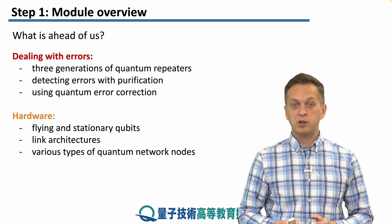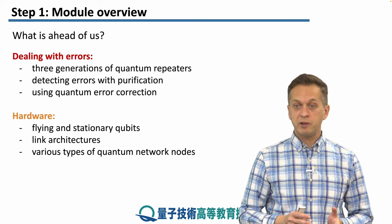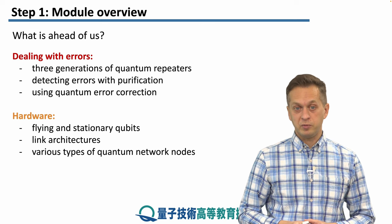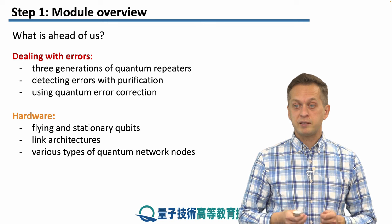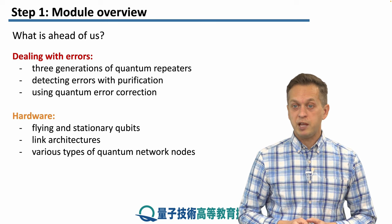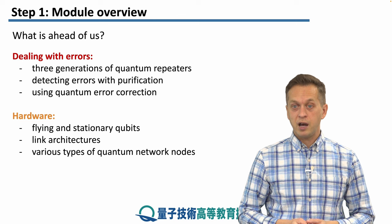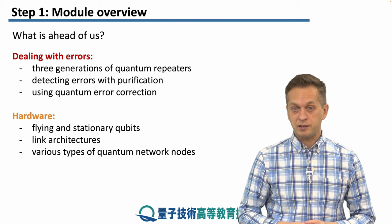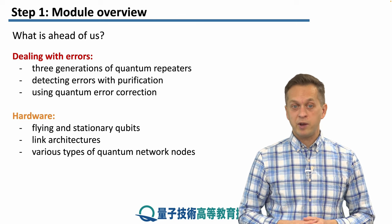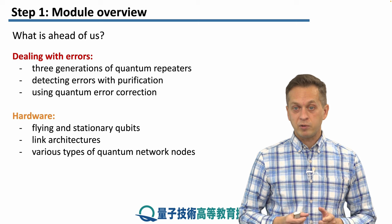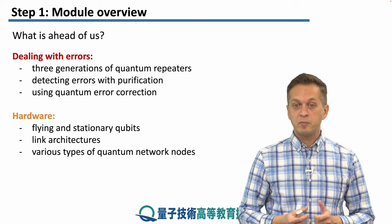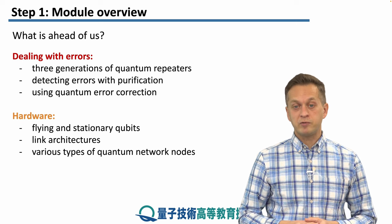Then we're going to talk about hardware — what's the difference between flying qubits and stationary qubits, and how do they fit into the whole picture of quantum networks? Then we will start to think about how we can establish Bell pairs between neighboring nodes of a network, and how we can establish link-level entanglement. You will see that there are various ways to do it, which we will introduce in our link architectures lesson. We will conclude this block by thinking about various types of quantum network nodes.